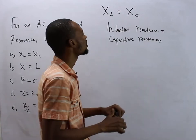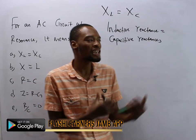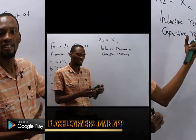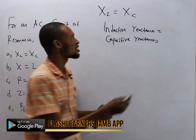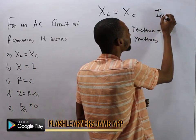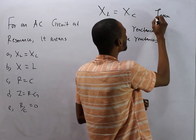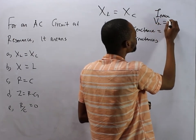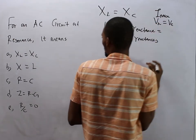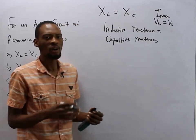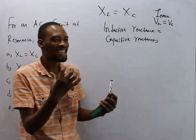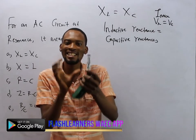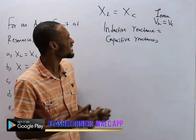So when this happens, the circuit is said to be at resonance. At resonance, current is maximum and voltage across inductor equals voltage across capacitor. Also at resonance, the circuit behaves as purely resistive. So these are the properties of a resonant circuit.